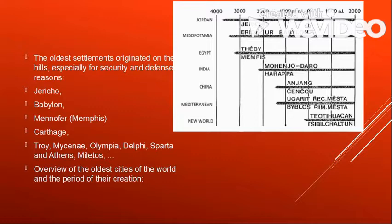On a timescale, Jericho is taken as the earliest settlement, followed by Babylon and others. The right-hand side shows the time frame for when each settlement came into being. Indian and Chinese urban settlements are also visible in this timeline — some of the oldest cities of the world.